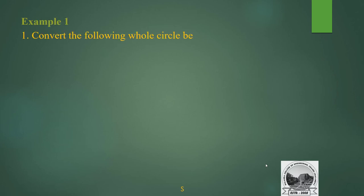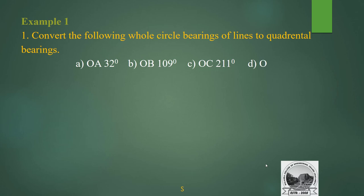To understand the conversion, here is Example 1: Convert the following whole circle bearings to quadrantal bearing. OA = 32°, OB = 109°, OC = 211°, OD = 303°. First, draw the whole circle bearing diagram. In WCB, the angle is measured clockwise from true north. So OA is at 32°, OB at 109°, OC at 211°, and OD at 303° — all plotted clockwise from north.